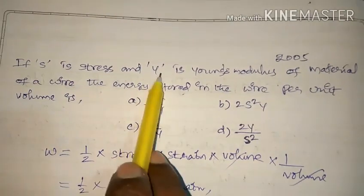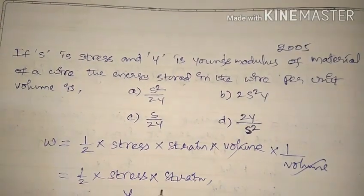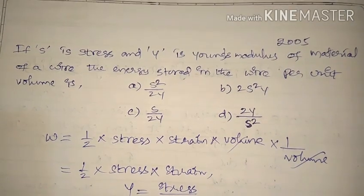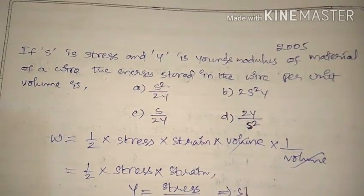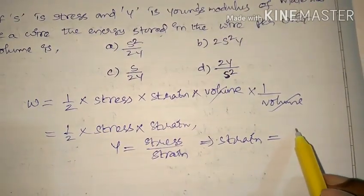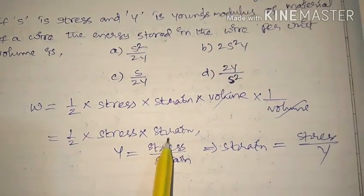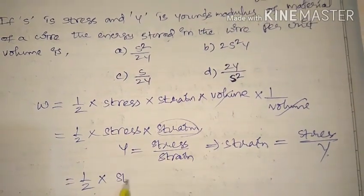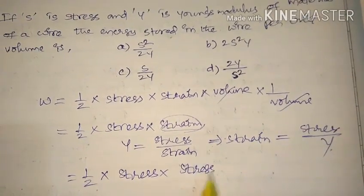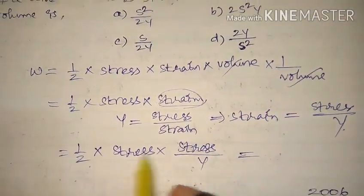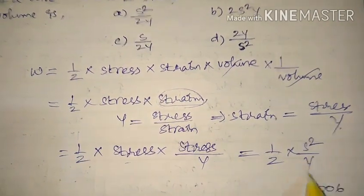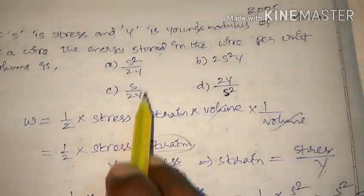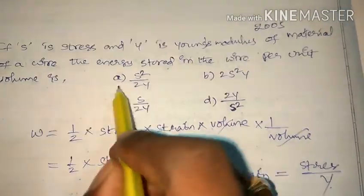From the given data, stress = S, and Young's modulus Y = stress/strain, so strain = stress/Y = S/Y. Substituting: energy per unit volume = (1/2) × S × (S/Y) = S²/2Y. So the answer is S²/2Y, which is option A.